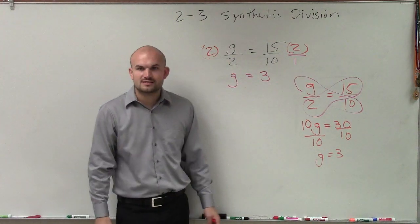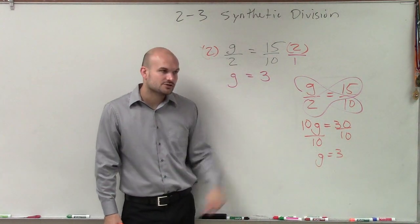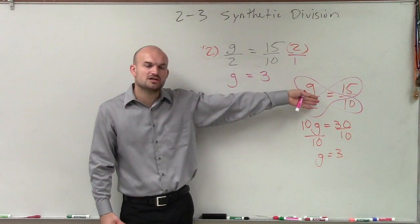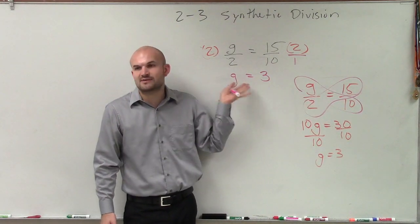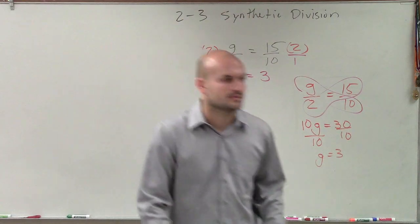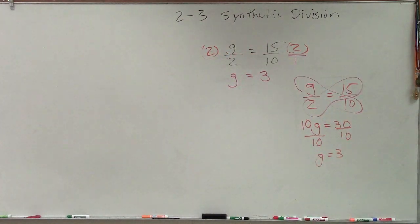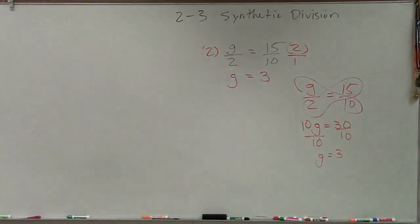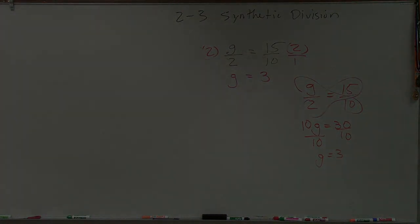Do you guys see how we're getting the exact same answer? All right. G equals 3 equals 3. So if you'd like to choose cross multiplication, I have no problem with it. I just want you to understand this method works as well. OK? And that would be a preferred method. I just wanted to make sure you guys understand the other method.